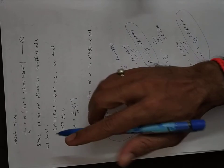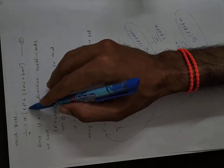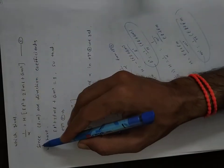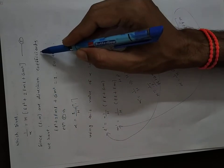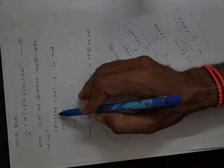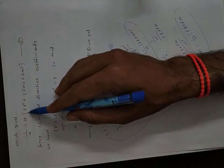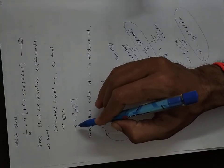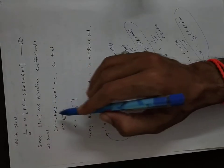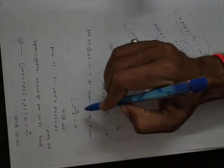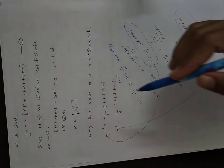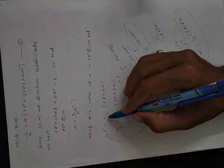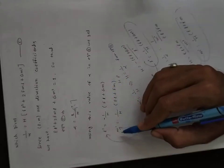This gives 1/α = H(EL² + 2FML + GM²) — equation number 5. Since L, M are direction coefficients, we have EL² + 2FML + GM² = 1, so equation 5 gives 1/α = H, i.e., α = 1/H.